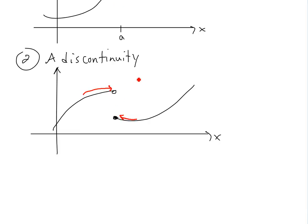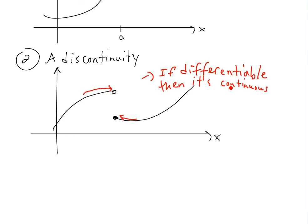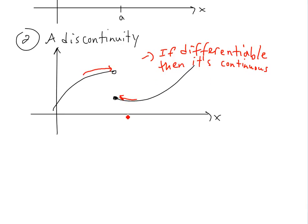Also, if you look at the previous theorem I showed in my earlier video — if it's differentiable then it's also continuous. So by contrapositive, if it's not continuous, it can't be differentiable. In this case it's not continuous, so it cannot be differentiable. By definition, the limit does not exist here.